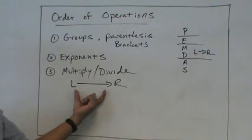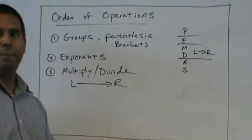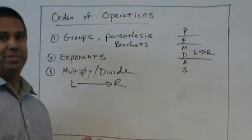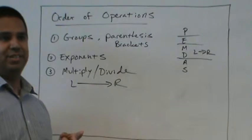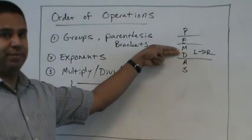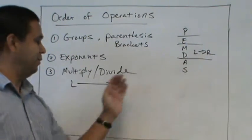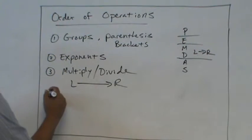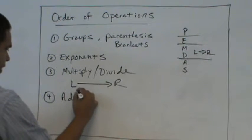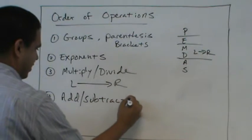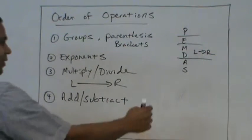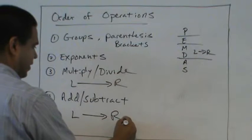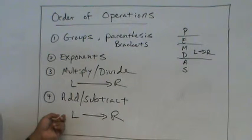And you have to remember we do both of those together at the same level, the same step, from left to right. The rule is not multiply before divide no matter what, and the rule is not divide before multiply. The rule is we multiply or divide from left to right, whichever comes first in the problem. So that's what the A and the S, add or subtract from left to right, okay?